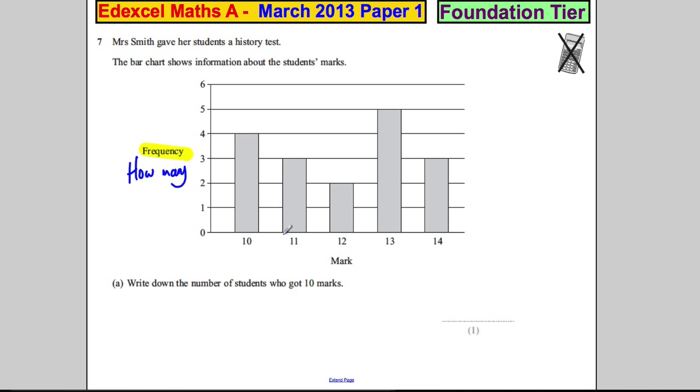So what we can tell from this: How many kids got 10 marks? Well, four kids. How many kids got 11 marks? Well, three kids. How many kids got 12 marks? Well, two kids. How many kids got 13 marks? Five kids. And how many kids got 14 marks? Three kids.